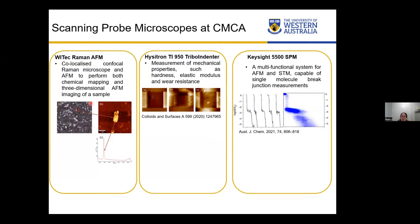We have four instruments under this platform. The first one is the VTAC Confocal Raman AFM. It combines the Confocal Raman Microscope with AFM to perform both chemical mapping and 3D AFM imaging. For example, this is a 100x optical image of graphite particles, and we can switch to the AFM mode to see the morphology of a single graphite particle, and also move to the Raman mode to see the chemical information. This is a very powerful instrument for both materials and minerals study.